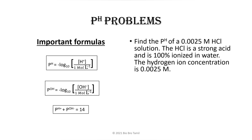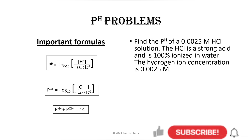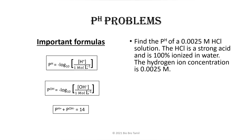Example one: Find the pH of a 0.0025 molar HCl solution. The molarity is 0.0025. HCl is a strong acid, so the hydrogen ion concentration is 0.0025 molar. It is 100% ionized.